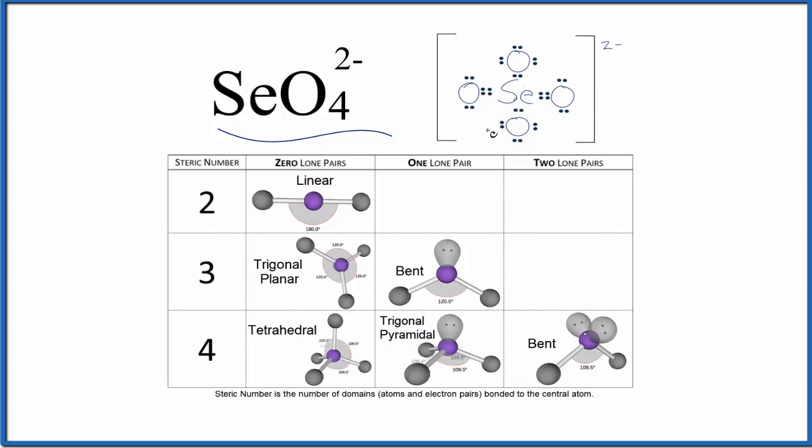The first thing we want to do is look at the number of things bonded to that central Se atom. That's called the steric number. We have one, two, three, four things, so that's the steric number.